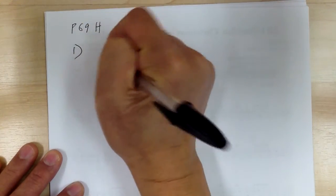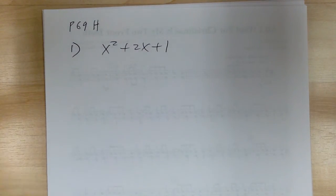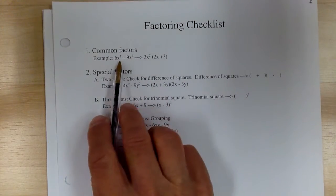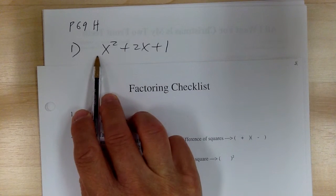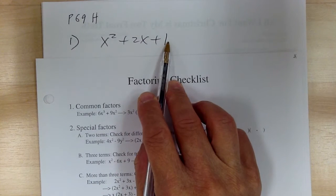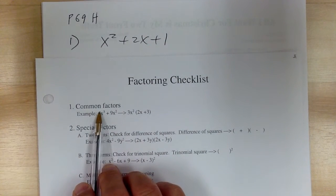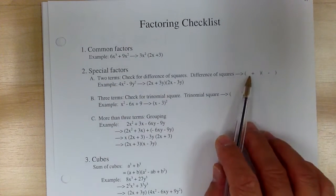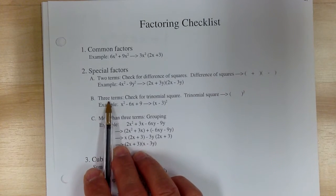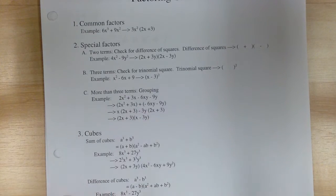Let's go to number one. You've got x squared plus 2x plus 1. When you're doing factoring, you go to your checklist. Step one: common factor. Can you factor out x? No. Can you factor out any numbers? No. So step one: cannot. Step two: check number of terms. Two terms — conjugates. Three terms — check for perfect squares. More than three terms — grouping, we'll do that later.